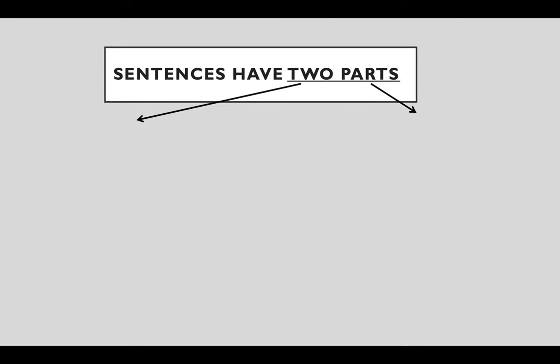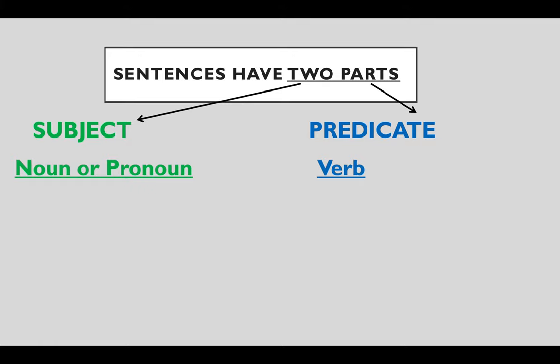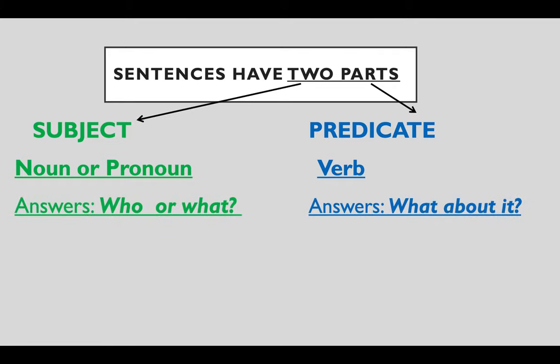Sentences have two parts. The first one is a subject and the second, the predicate. A subject is a noun or a pronoun. The predicate has a verb as the first word and then everything else. The subject answers who or what, and the predicate answers what about it.